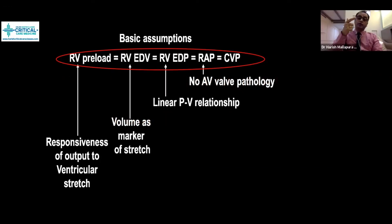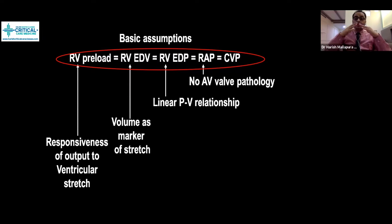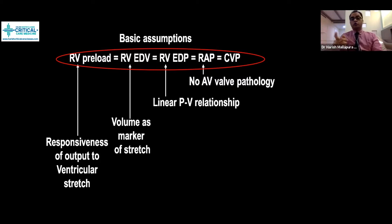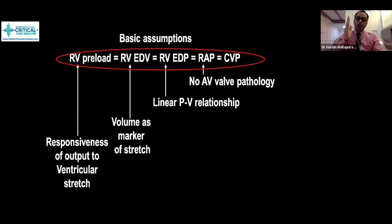We assume right atrial pressure is equal to left atrial pressure, which is the same as pulmonary artery occlusion pressure, which equals left ventricular end-diastolic pressure, equivalent to left ventricular end-diastolic volume. We are making many assumptions. If any pathophysiology occurs in between — such as tricuspid valve regurgitation, tricuspid stenosis, pulmonary artery stenosis, mitral regurgitation, or stenosis — this assumption is not going to be valid.